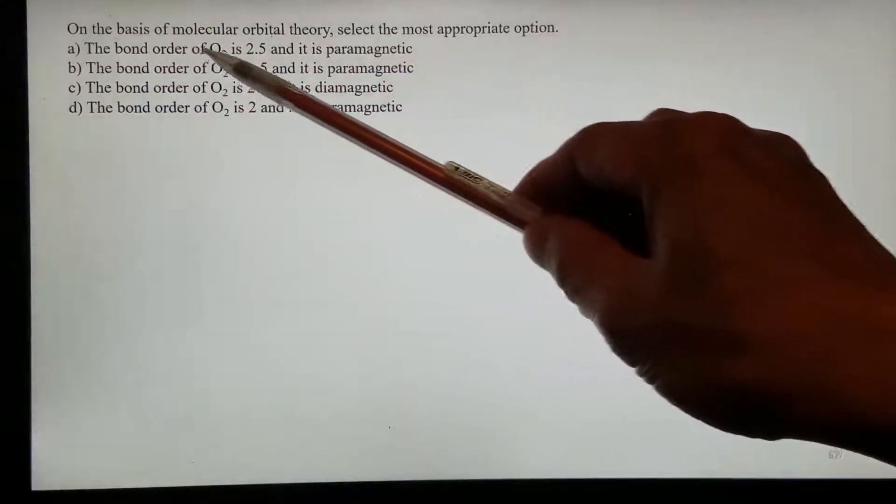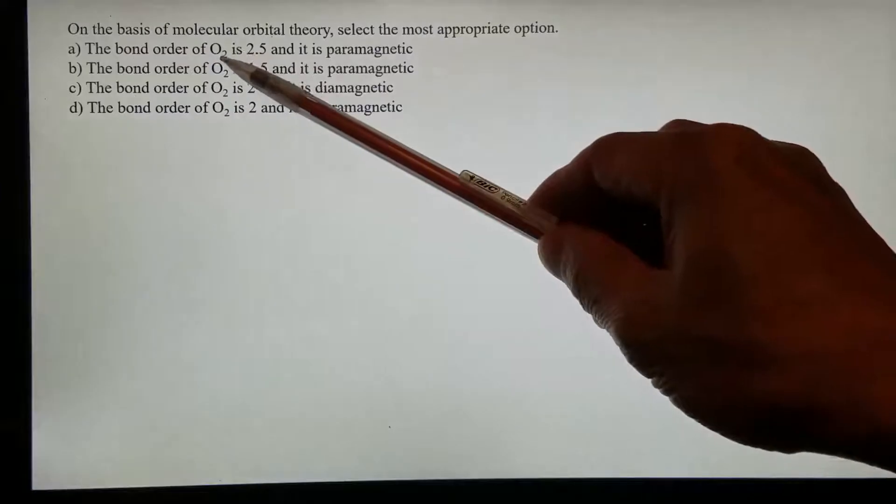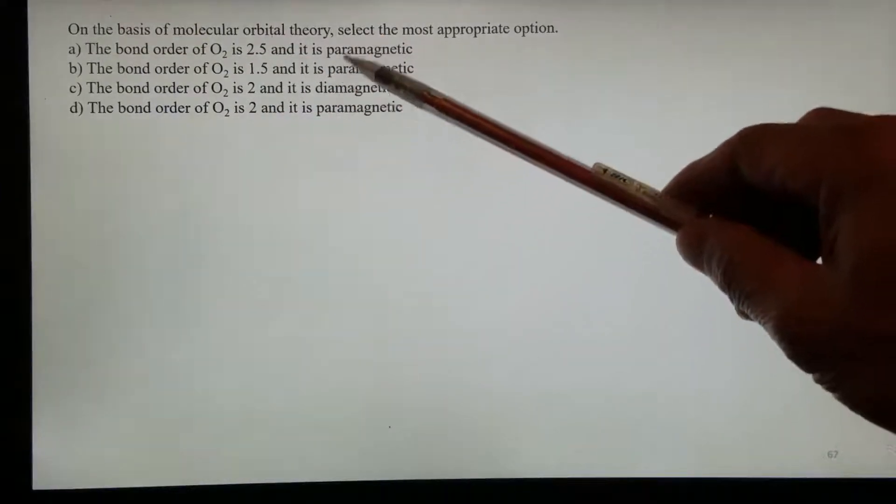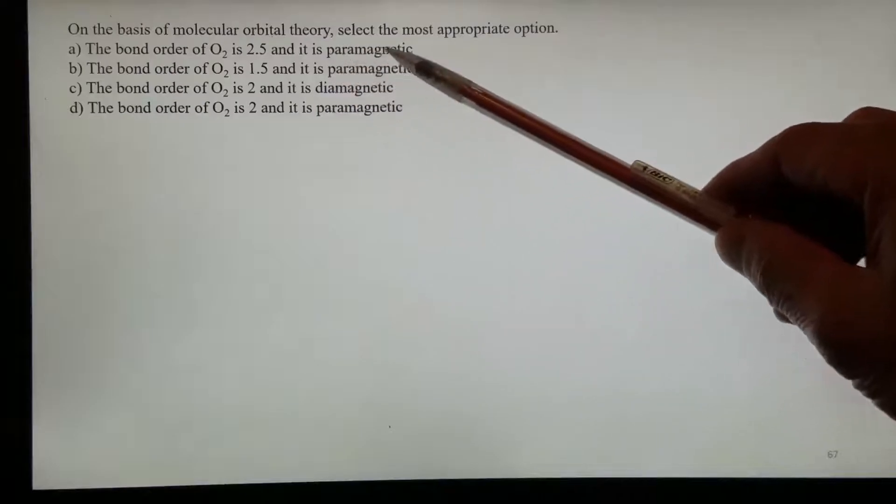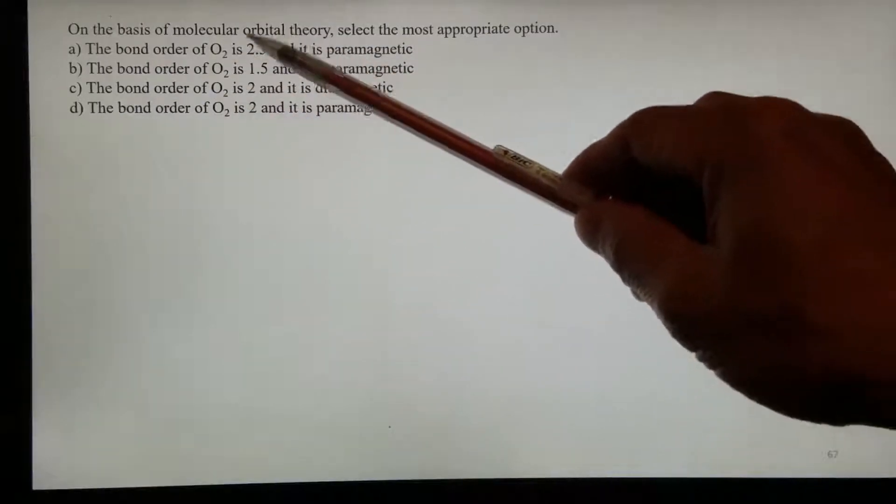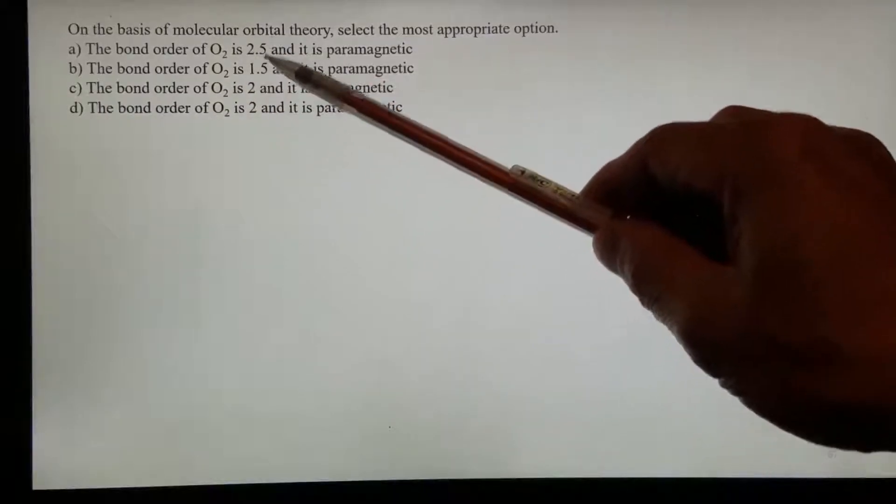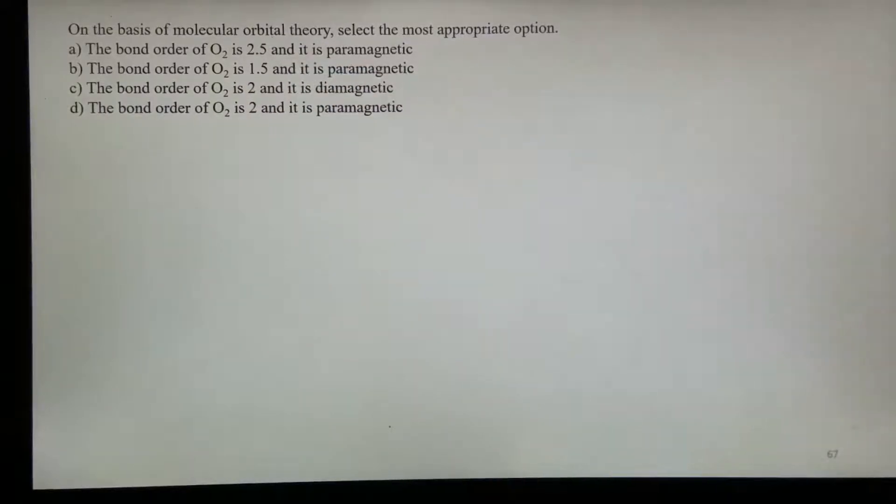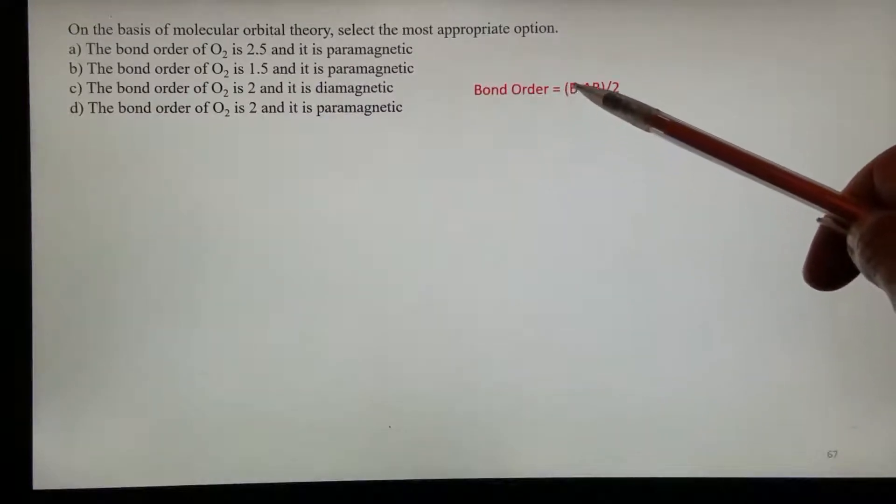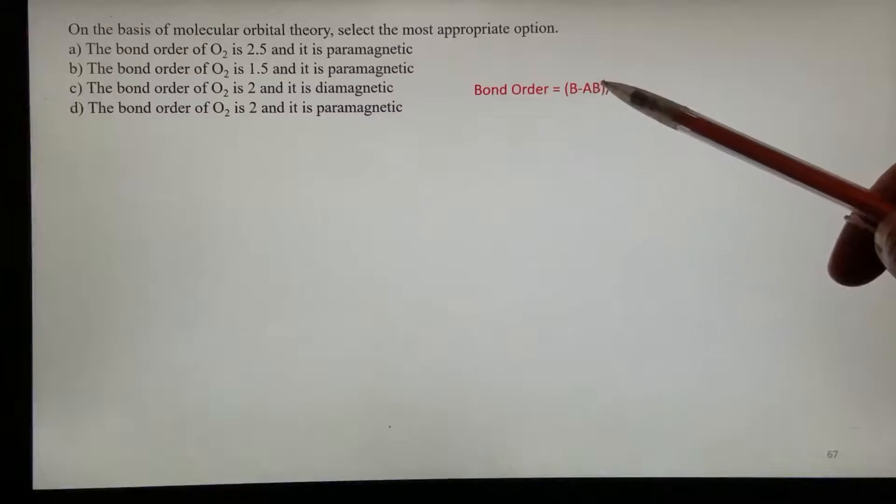It talks about the bond order of oxygen and whether it is paramagnetic or diamagnetic. Let's first work on the bond order. Bond order can be calculated using the bonding electrons subtracted by the anti-bonding electrons divided by 2.